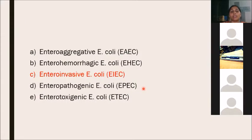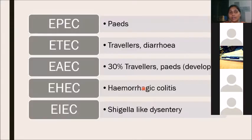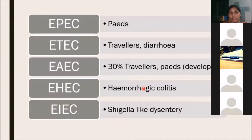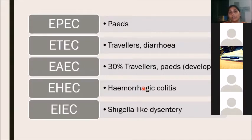EPEC is associated with pediatric infections, often causing diarrhea and outbreaks in the pediatric age group. ETEC is associated with travelers but causes diarrhea, not dysentery. Entero-aggregative E. coli (EAEC) accounts for 30% of traveler's diarrhea cases and is also associated with pediatric infections.